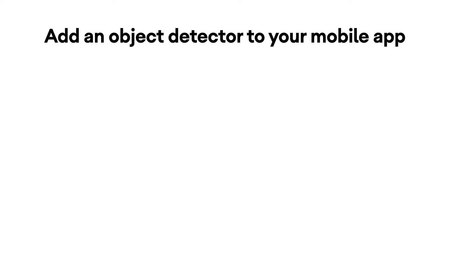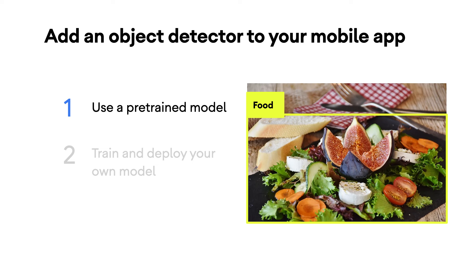There are two ways to add an object detection capability to your mobile app. First, use a pre-trained model, or second, train and deploy your own model.